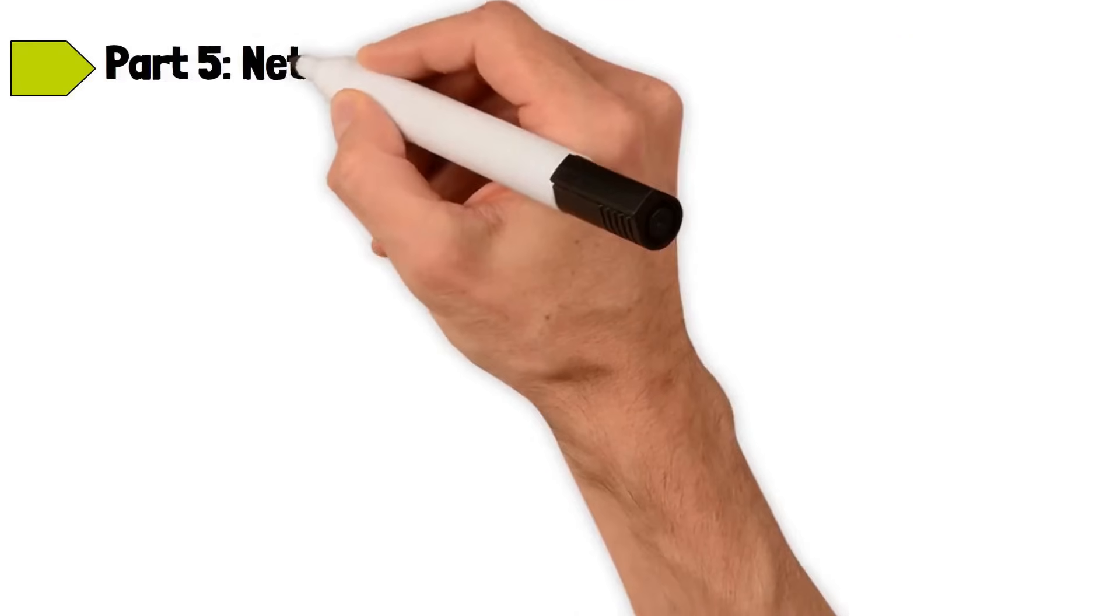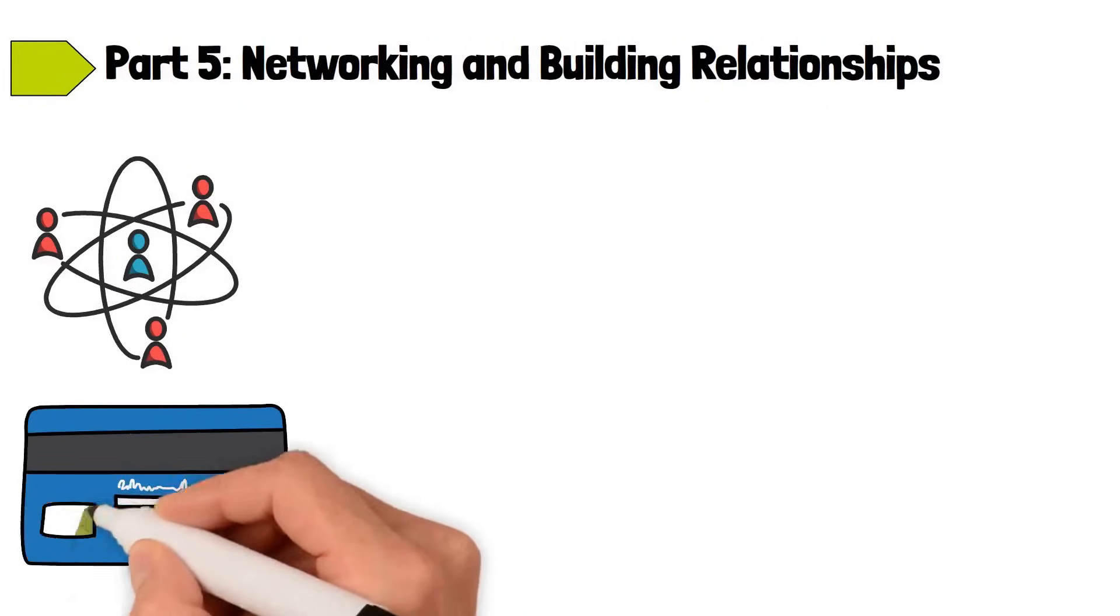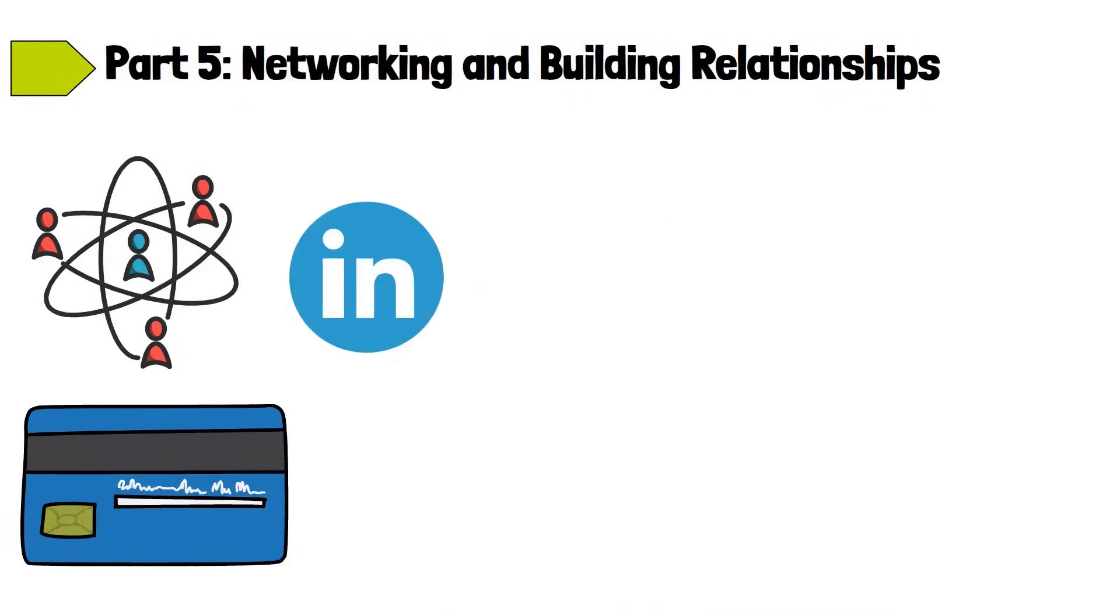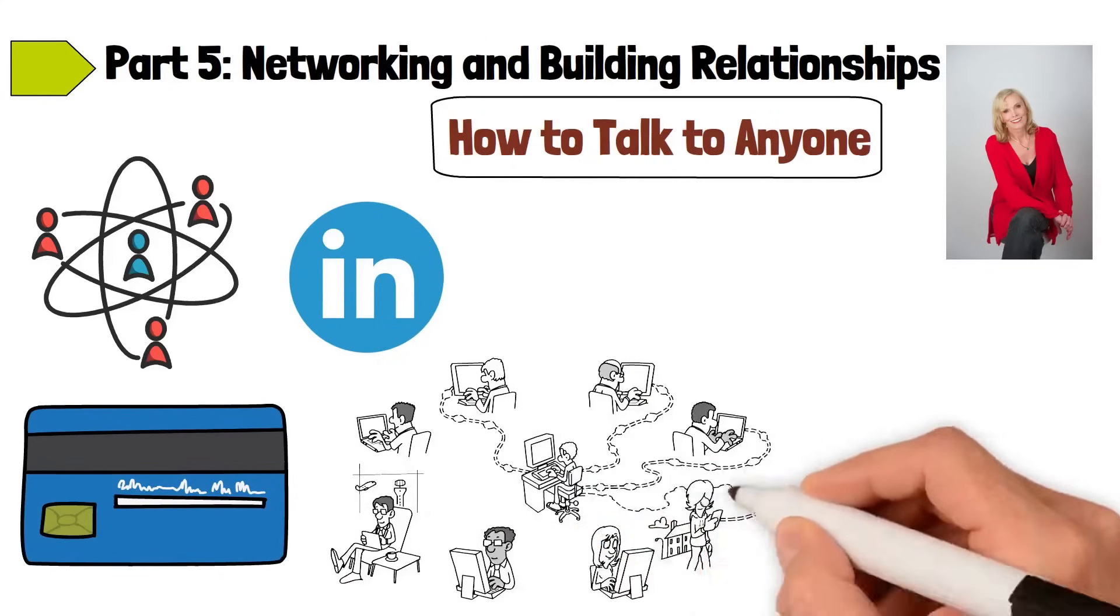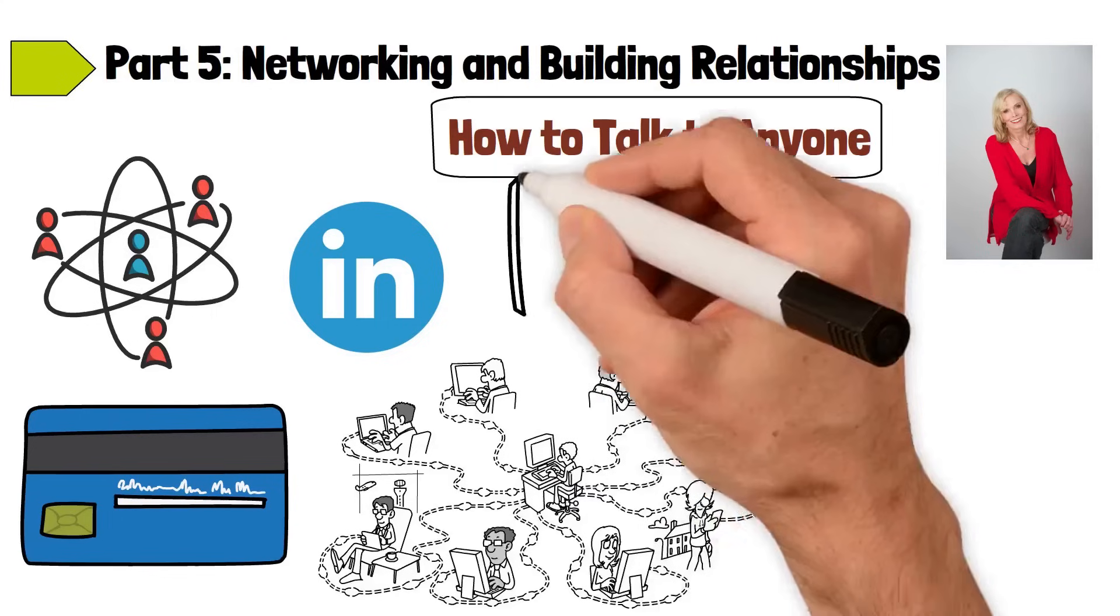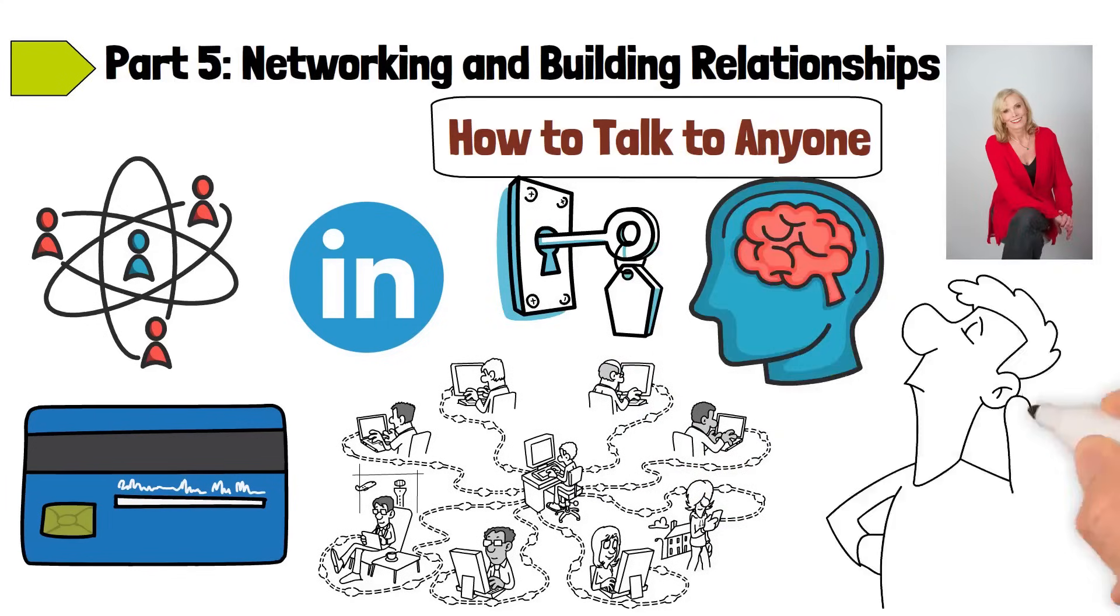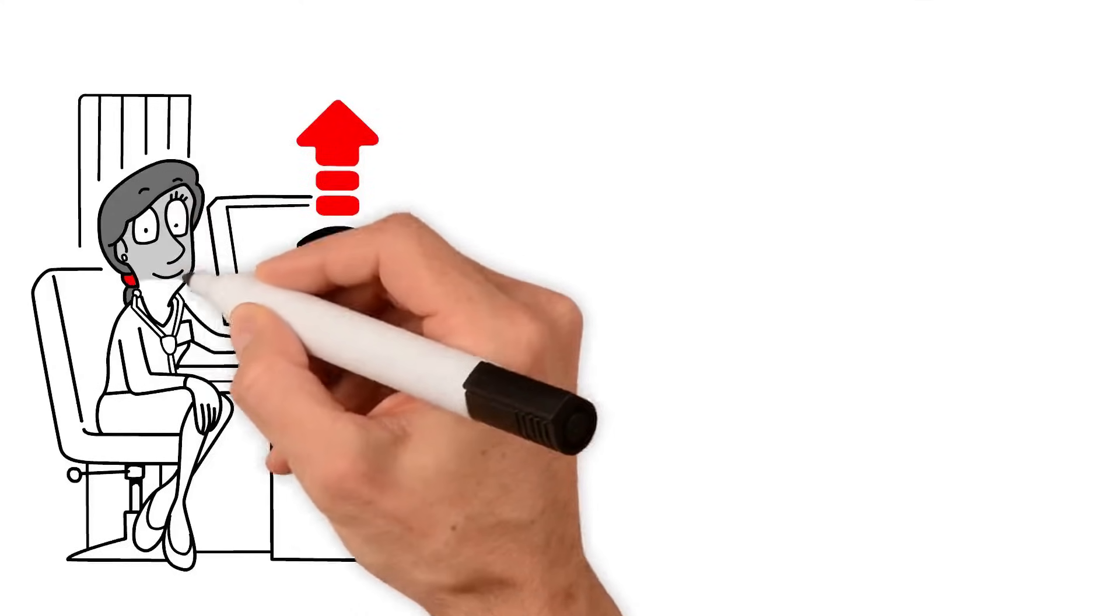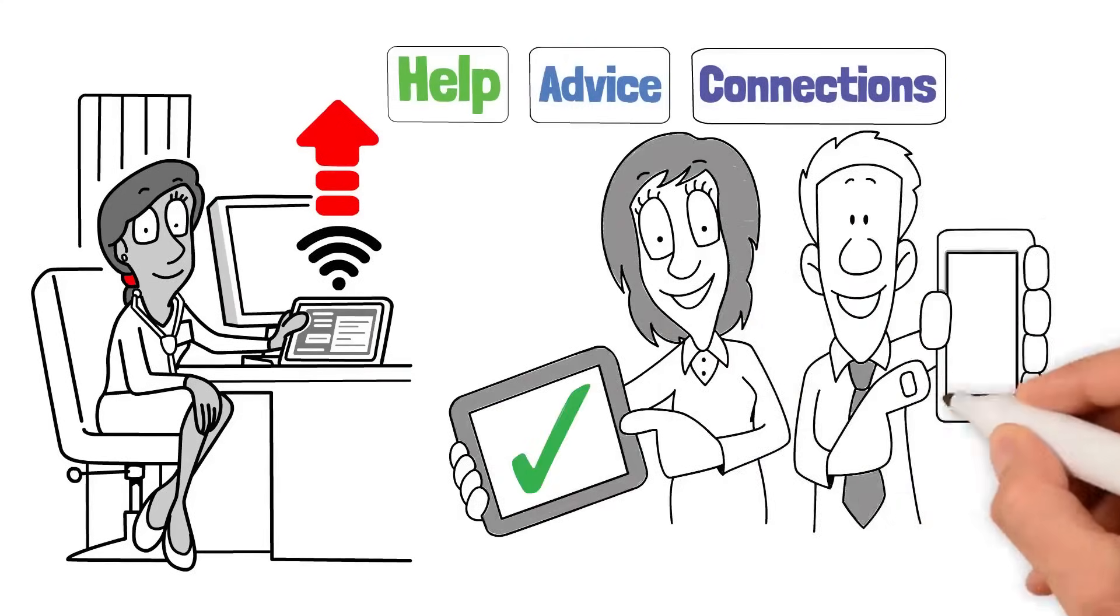Part 5: Networking and Building Relationships. Effective networking is a cornerstone of professional success, and it goes far beyond just exchanging business cards or adding connections on LinkedIn. In How to Talk to Anyone, Leil Lowndes provides a treasure trove of tips for turning networking from a daunting task into an enriching experience. One key insight is the importance of approaching networking with a mindset of giving rather than taking. When you enter a networking scenario with the intent to offer help, advice, or connections, it creates a more genuine interaction and establishes a foundation of trust and mutual respect.